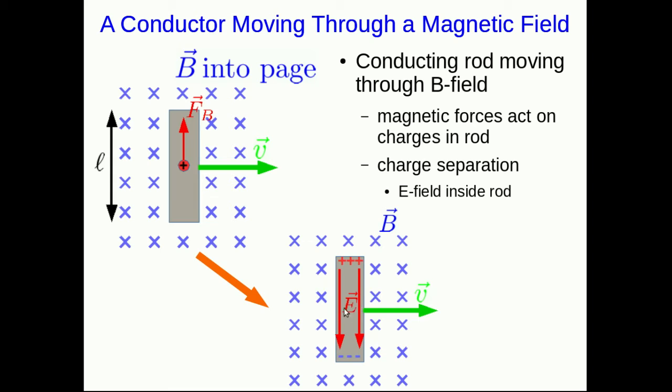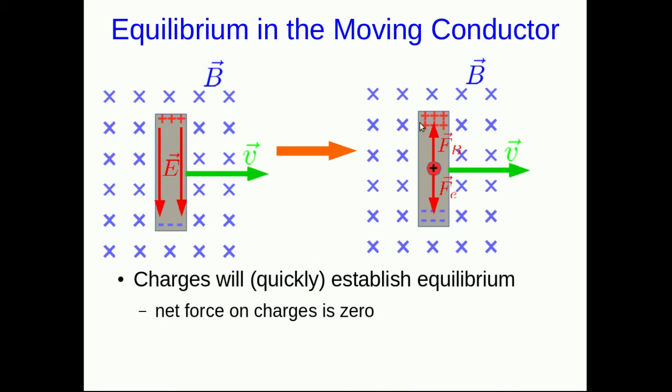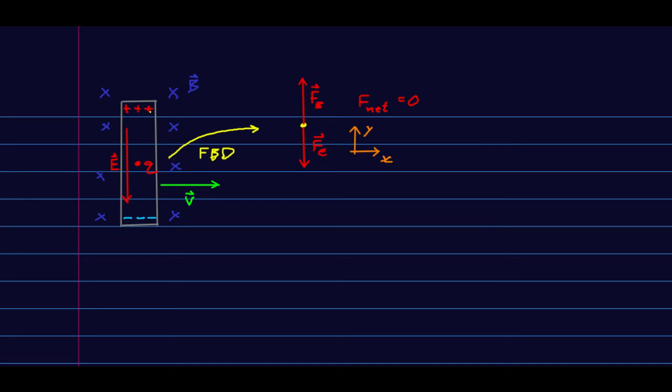We've just had charge separation and so as usual charge separation will produce an E field inside the rod. Well eventually, and eventually is in fact very quickly, there will be an equilibrium established where the downward force due to that E field on these charges exactly balances the upward magnetic force and the net force on these positive charges inside the conductor is zero. So we've got our conducting rod full of these positive charges. They're moving through this B field that's created a force on them that separates them. And so the free body diagram for those charges is an upward magnetic force, a downward electric force, balancing so F net is zero.